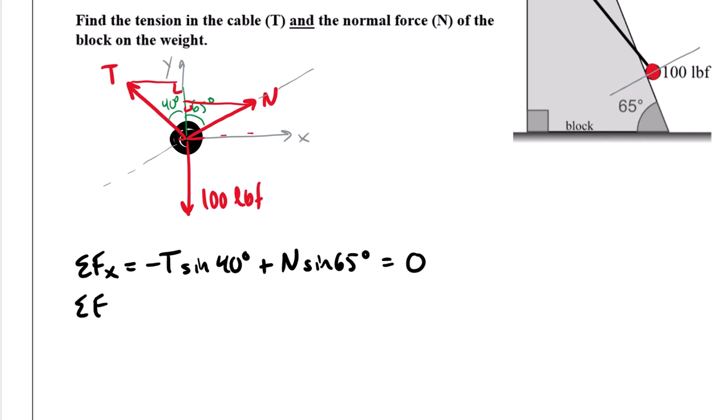And then if we sum our forces in the Y direction vertically, we have minus 100 pound force vertical and then we have two positive components. So plus T, now this is going to be the cosine of 40 degrees adjacent along that Y axis and then plus N cosine of 65 degrees. That sums up to zero.